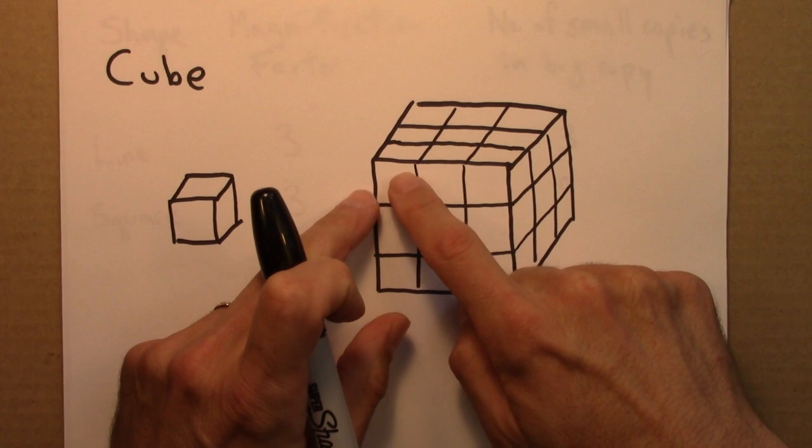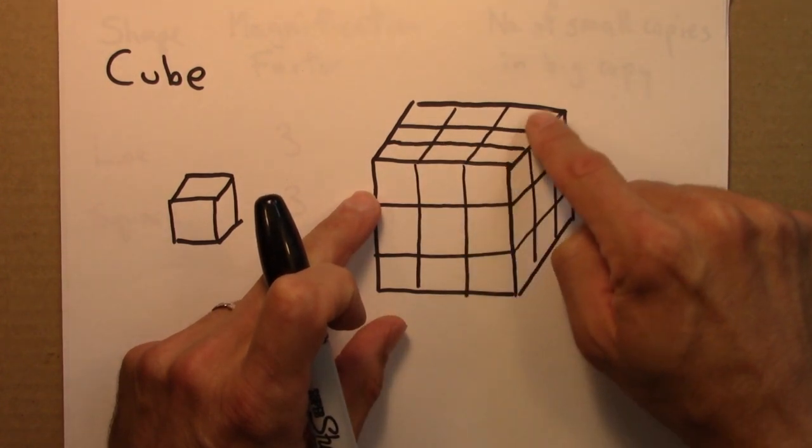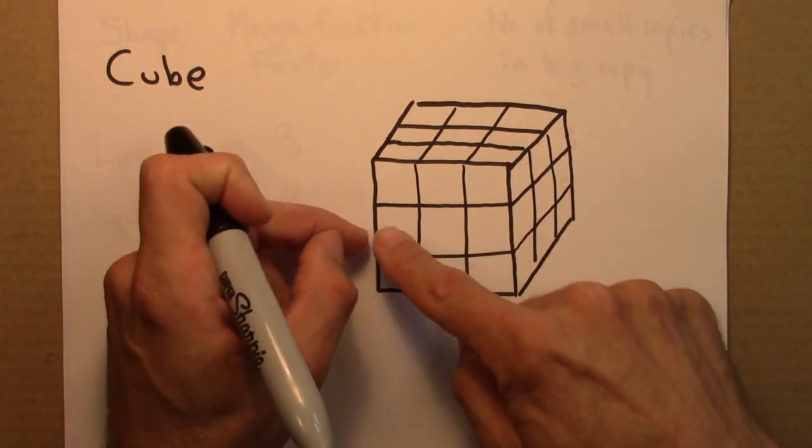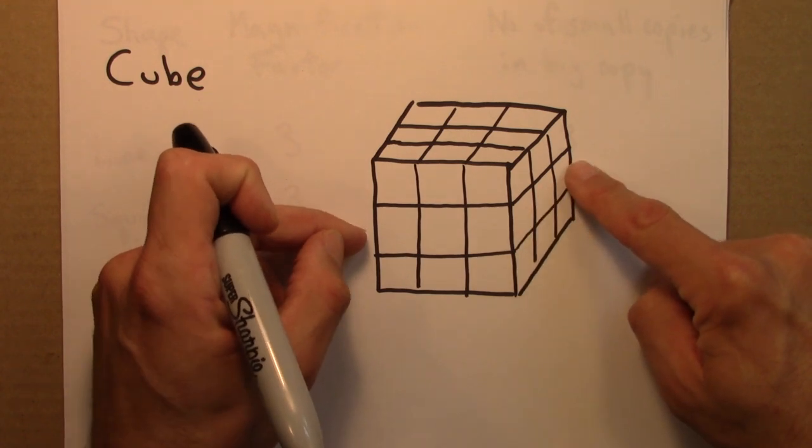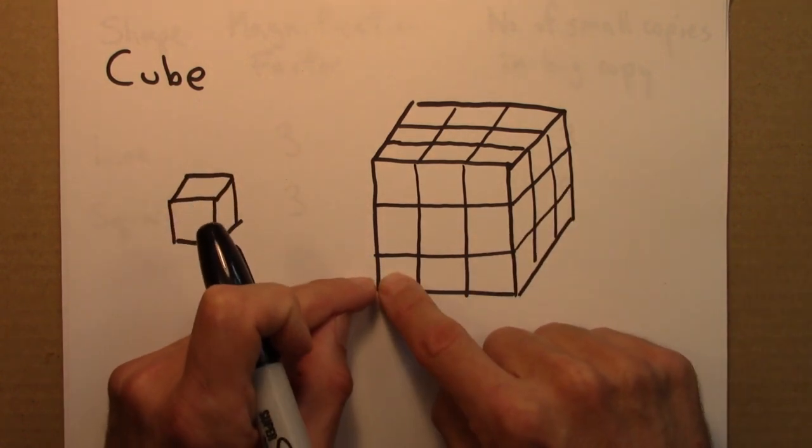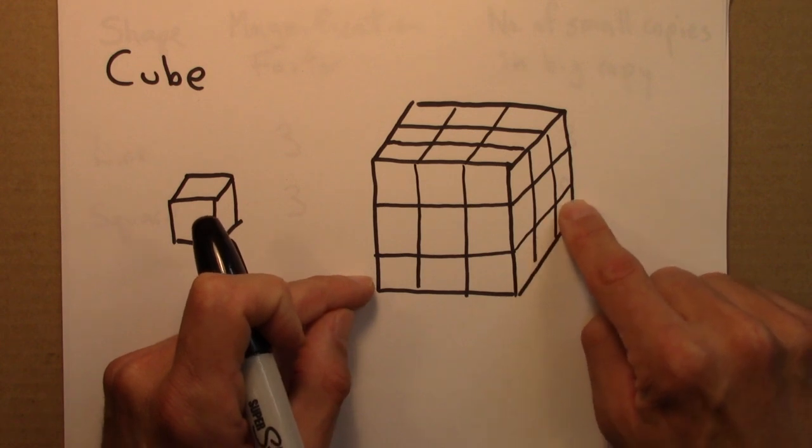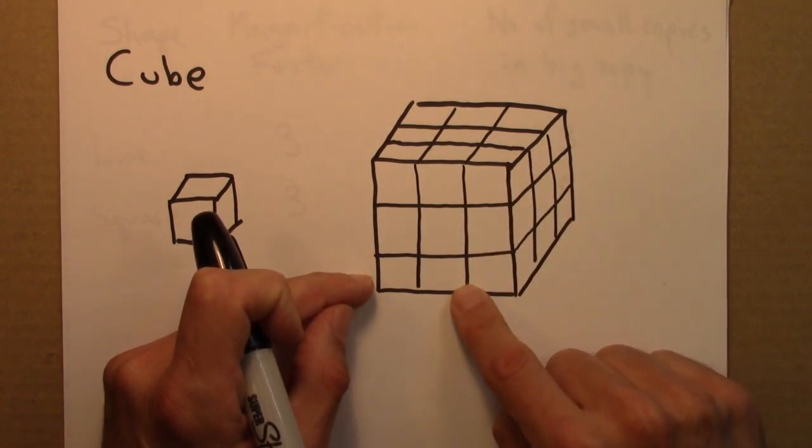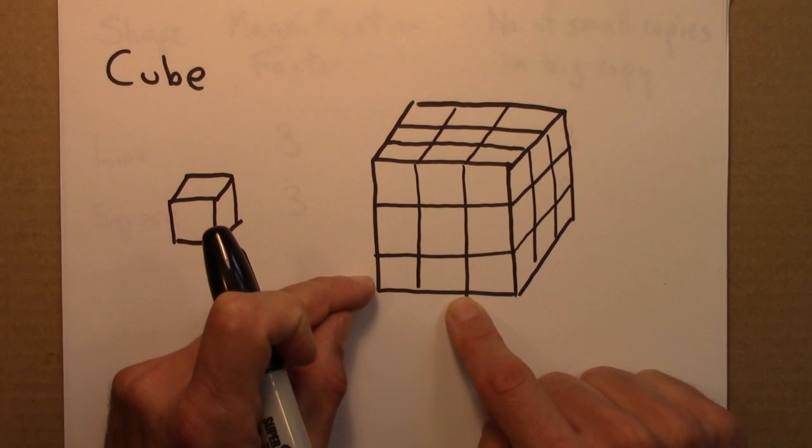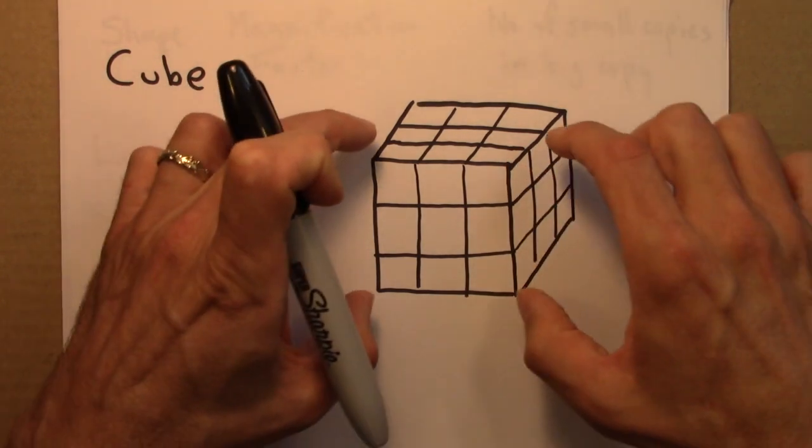So let's think about how many small cubes are in this big cube. Well, in this top layer, there are one, two, three, four, five, six, seven, eight, nine. And then there's another layer or slice here, another nine. And another nine here on this bottom slice. So nine plus nine plus nine gives me 27. So there are 27 small cubes in this larger cube.